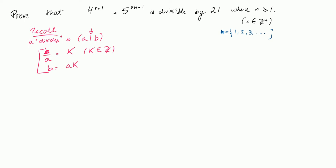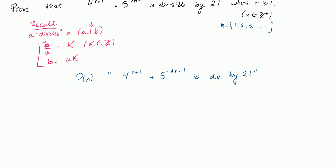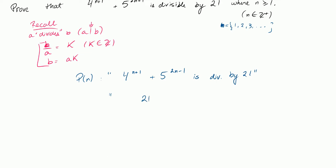So here my statement P(n) is going to be that 4 to the n plus 1 plus 5 to the 2n minus 1 is divisible by 21. Or, if I want to use the divides language, I can say that 21 divides 4 to the n plus 1 plus 5 to the 2n minus 1. That's my statement to prove.